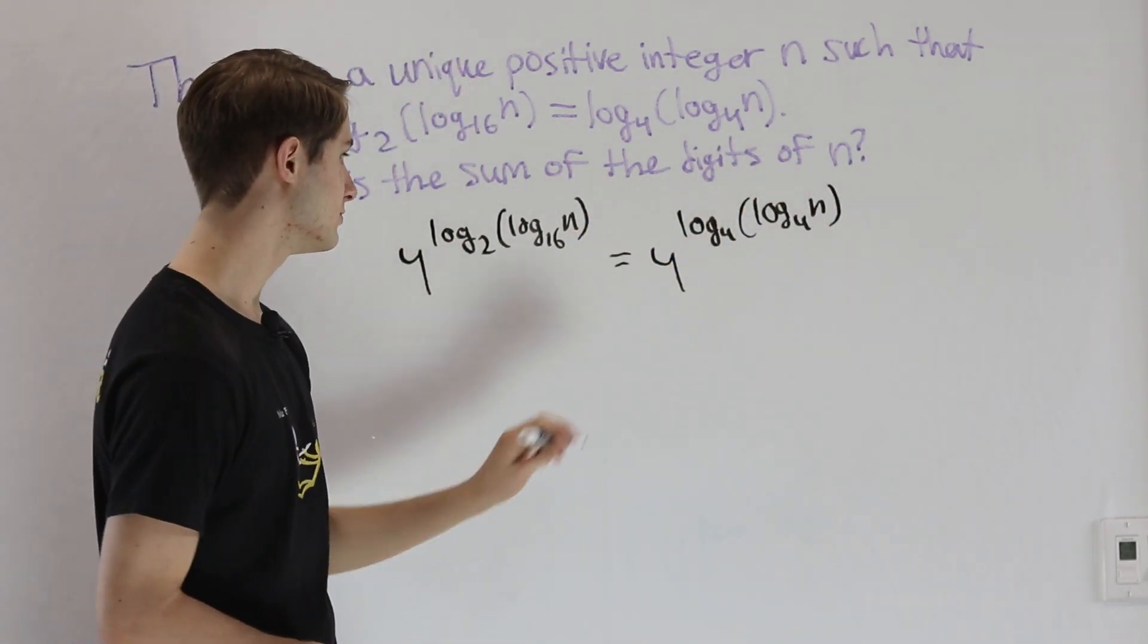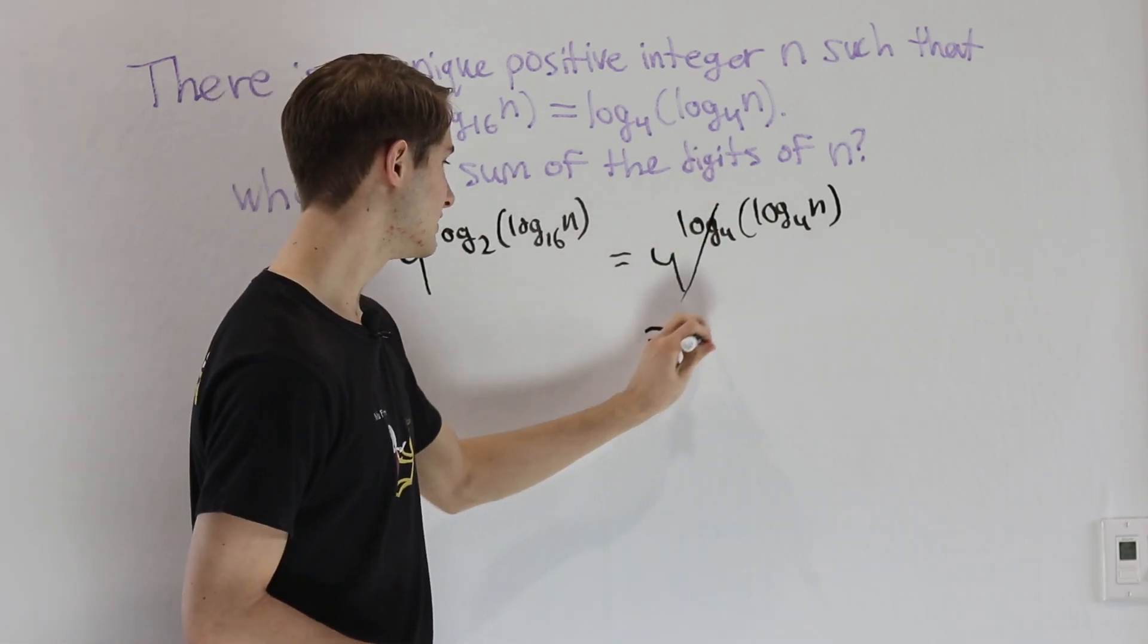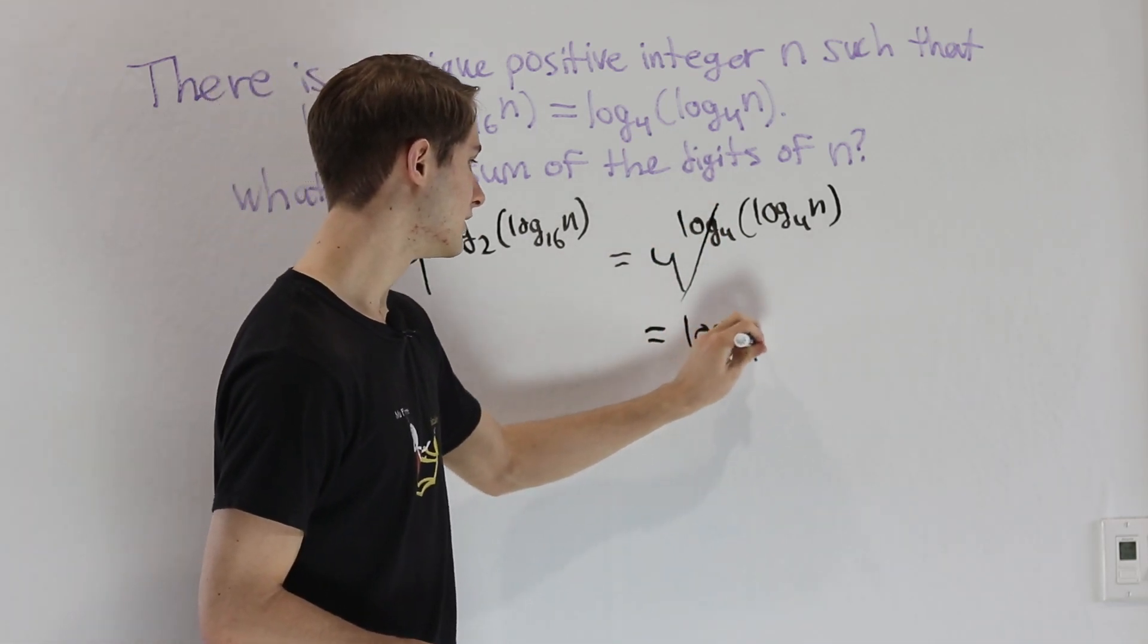Immediately on the right side of the equation, 4 to the power of log base 4 is going to cancel and we're just going to get log base 4 of n.